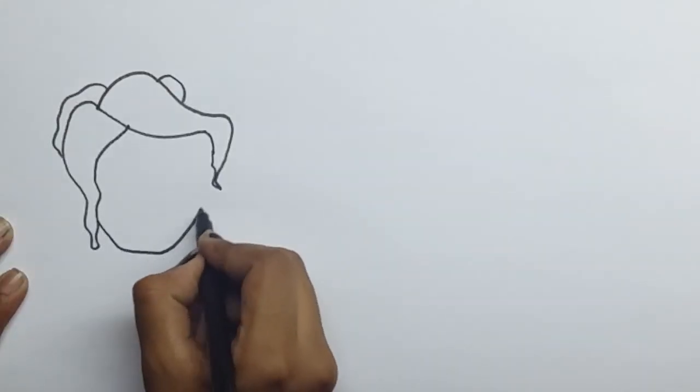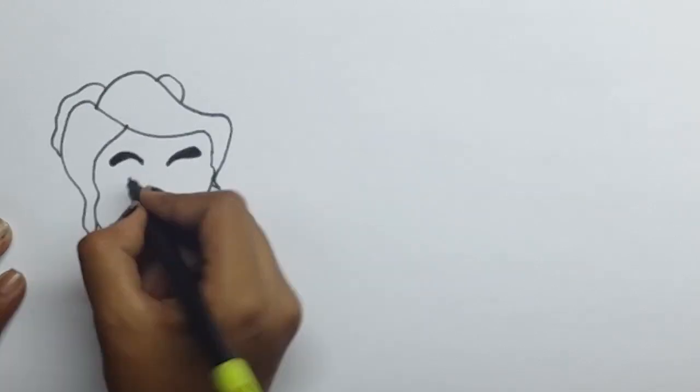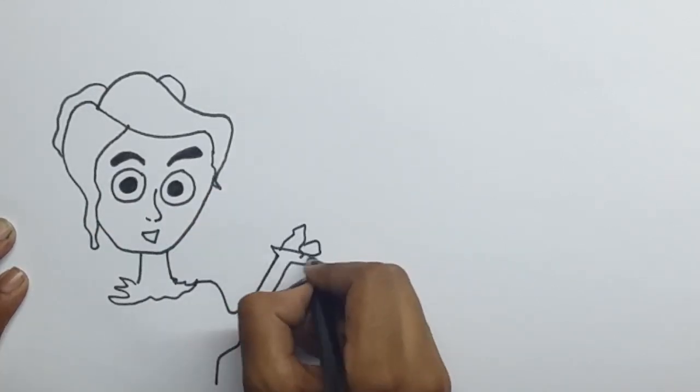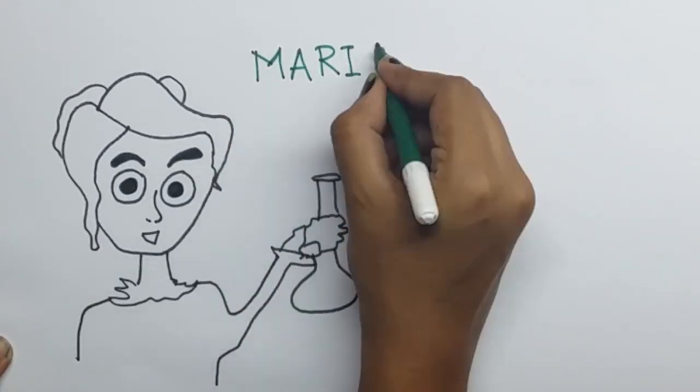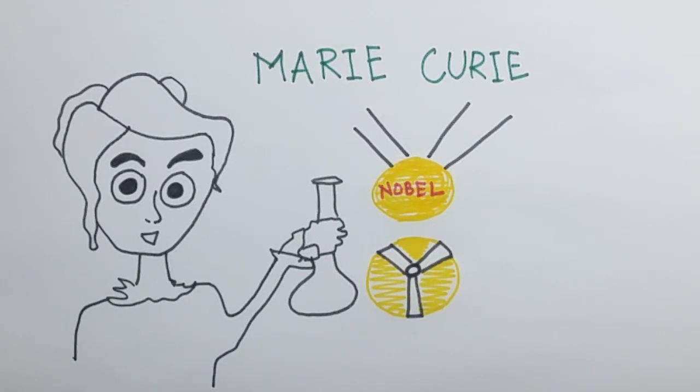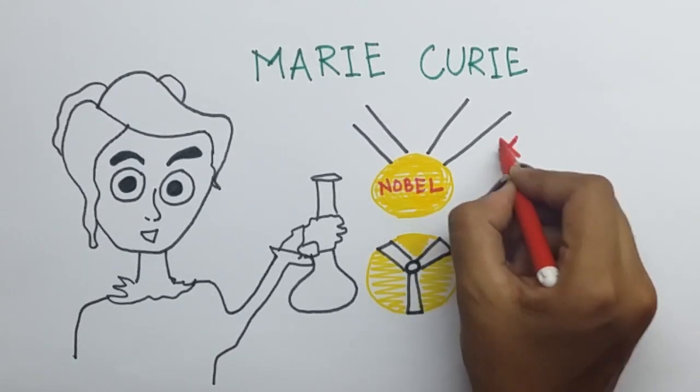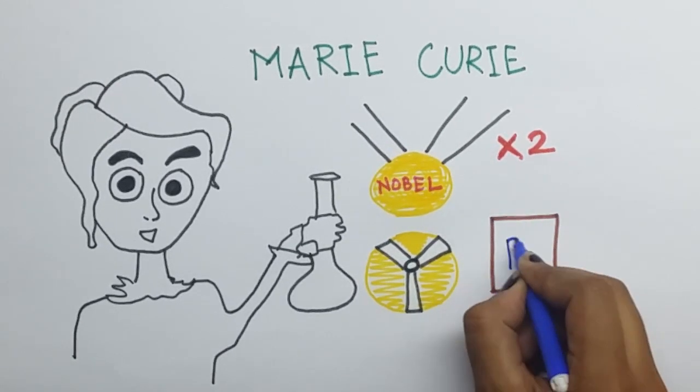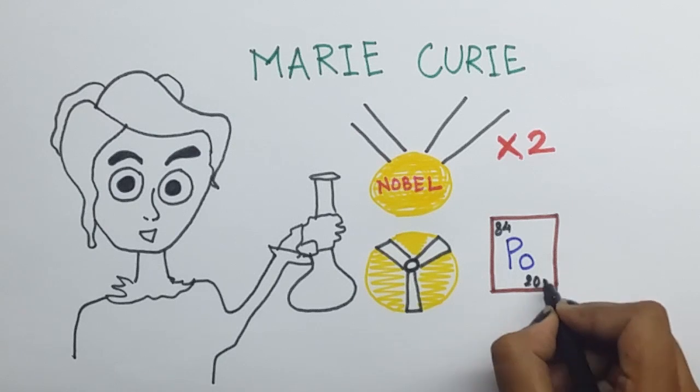One of the only female scientists that people can name today is Madame Marie Curie. Madame Curie was a Polish and naturalized French physicist and chemist who conducted pioneering research on radioactivity. She was the first female scientist to receive a Nobel Prize in Physics. She was also the first scientist ever to receive two Nobel Prizes for her work in radiation. She is also given credit for discovery of two new elements, polonium-84 and radium-88.